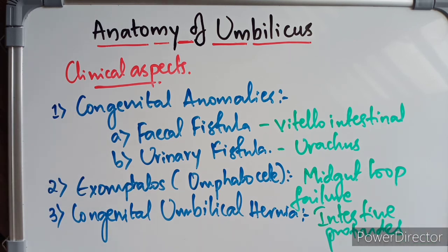These are the clinical aspects of the umbilicus. The umbilicus is also called the 'hotbed of embryology' by clinicians. This concludes the anatomy of the umbilicus. Please like, subscribe, and comment, and make sure to watch our other anatomy videos. Thank you so much.